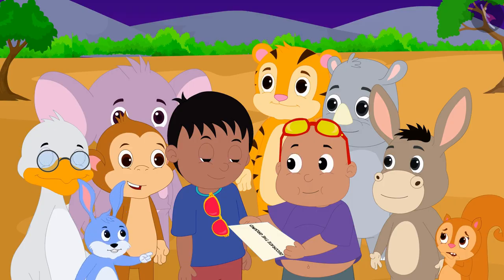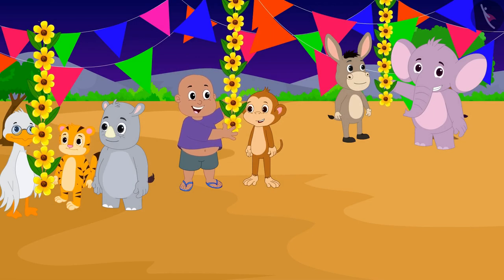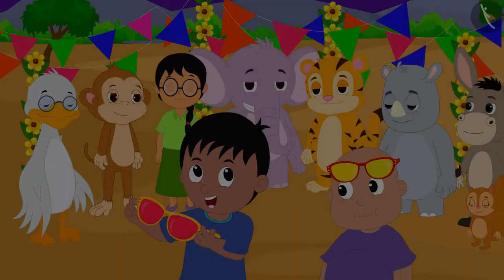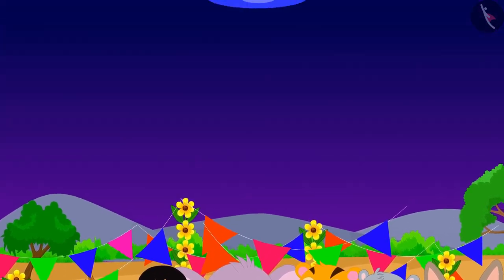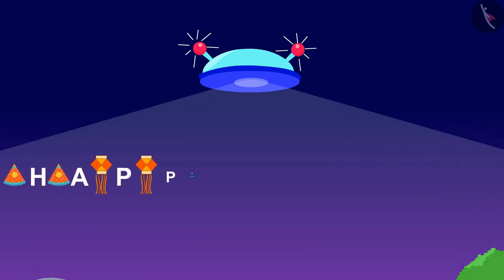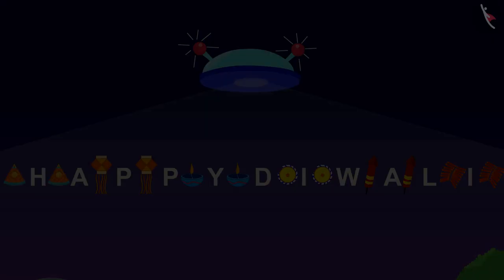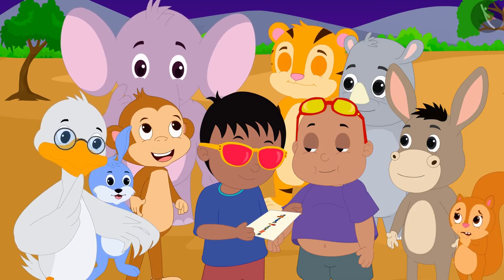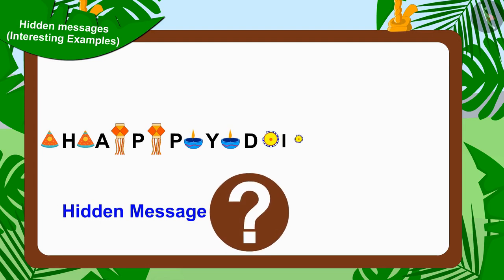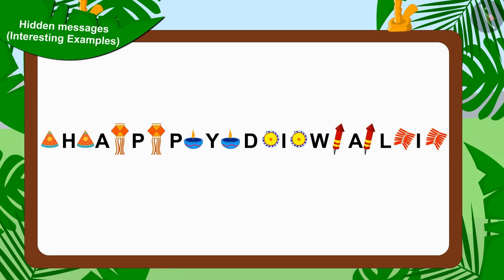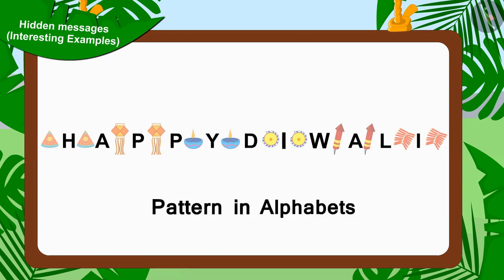All the villagers decorated the ground with all their heart. Now Raju once again looked at the sky with his glasses and saw a new hidden message. The villagers together started solving this hidden message. Children, can you solve Jeev's hidden message? Well done children — your answer is absolutely correct! The message is hidden in the form of one alphabet in between these shapes.